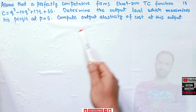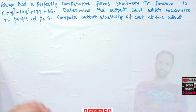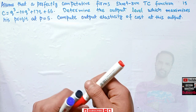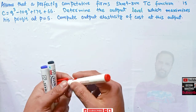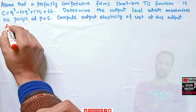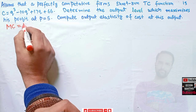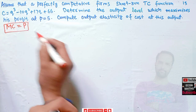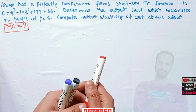When price is 5, we have to compute the output elasticity of cost at this output. So since we have a perfectly competitive firm, the profit maximization condition will require that marginal cost should be equal to price, or price is equal to marginal cost. This is the profit maximizing condition.